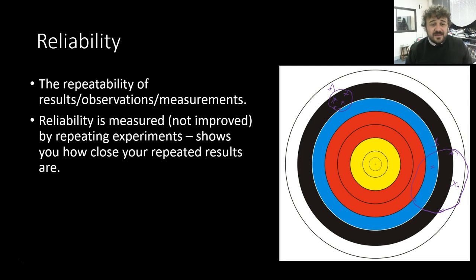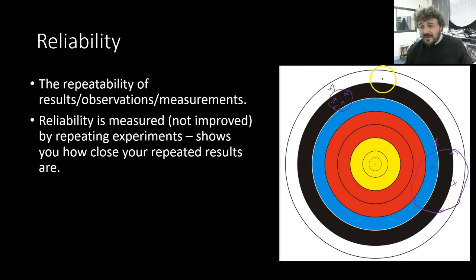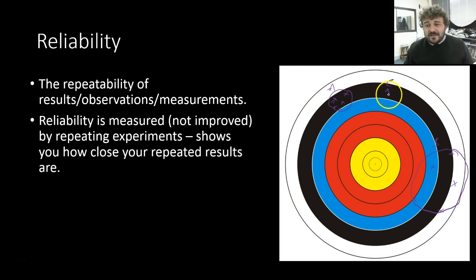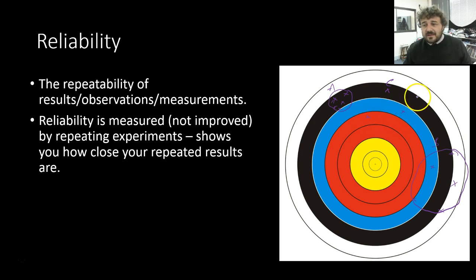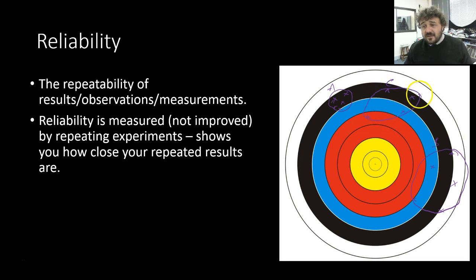Reliability is measured — not improved — by repeating the experiments. Over here we've got Archer C. They have a bow and arrow, they fire one. We have no idea how reliable Archer C is — they've only shown us once. Are they going to hit the same spot? We don't know. The next shot is here, the next one is here, and the next one is here. So by repeating the experiment, we've measured their reliability, and it turns out Archer C is not super reliable.